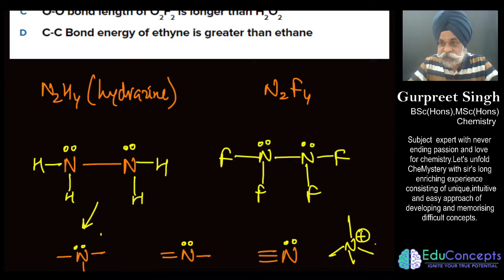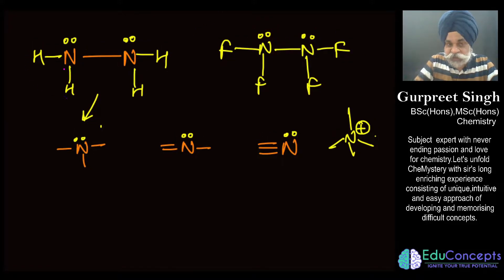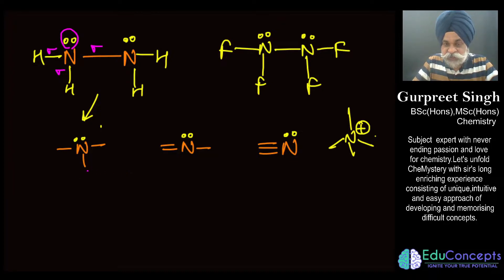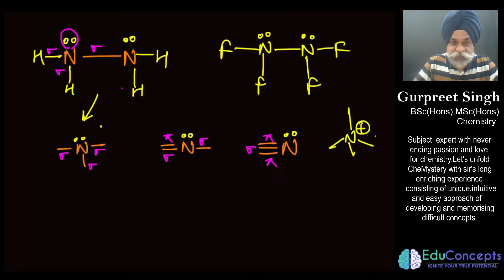Around each nitrogen we can see one lone pair and three sigma bonds. For students from 10th or 11th class who haven't encountered sigma and pi bonds yet: a single line represents a sigma bond, a double bond has one sigma and one pi, and a triple bond has one sigma and two pi. Around this nitrogen there are three sigma bonds and one lone pair.